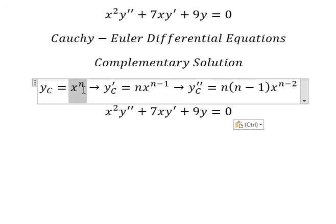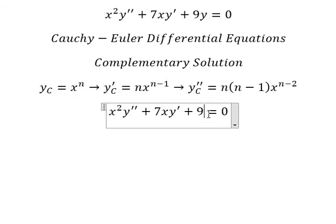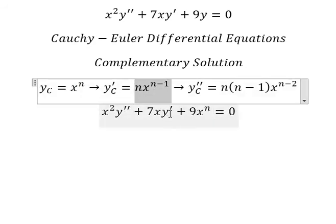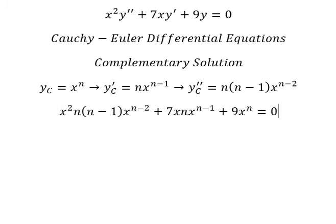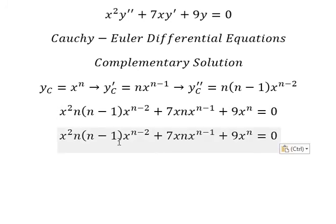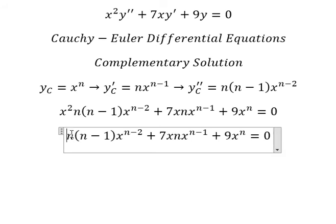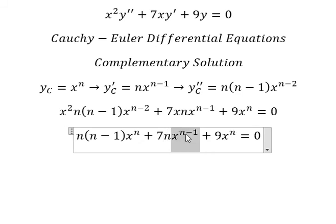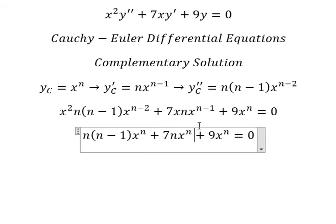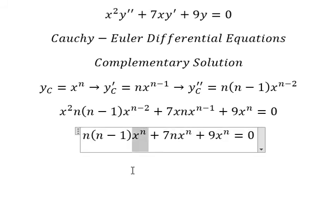We substitute these into the equation. Simplifying: x squared times x to the power of n minus two gives x to the power of n, and x times x to the power of n minus one also gives x to the power of n. Now we can factor out x to the power of n.